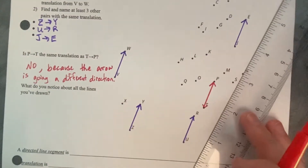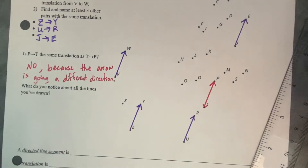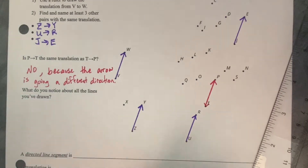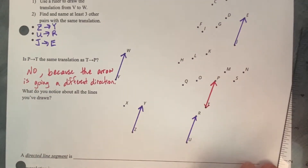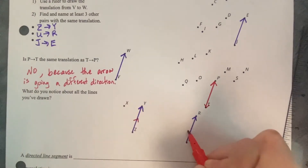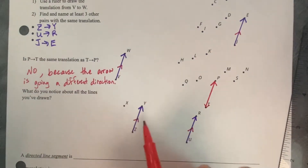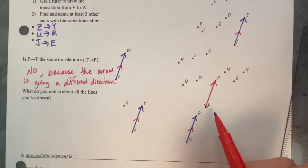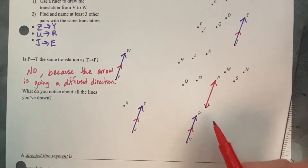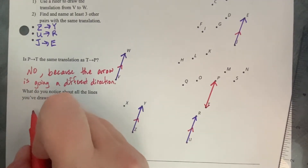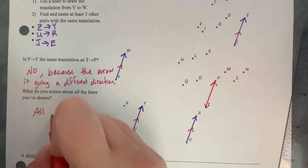What do you notice about all the lines that you've drawn? Yes, they're all the same length, and all the purple ones I drew are going the same direction. But another important thing you should notice about directed line segments is that they are all parallel to each other. We've seen this parallel notation before, where arrows on top of the segments show they are all parallel. To be the same translation, the directed line segments must all be parallel to each other.